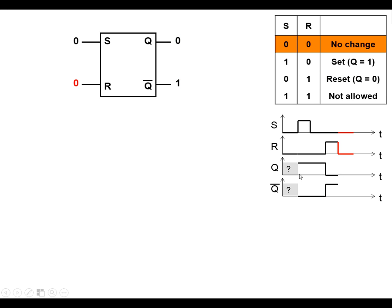R goes low again back to the no-change state, so no change in the output. I'm going to make S go high again and that just makes Q go high and Q-bar go low. I haven't covered the not allowed state where both inputs are high.